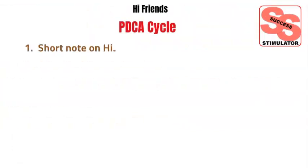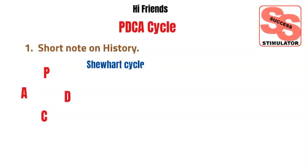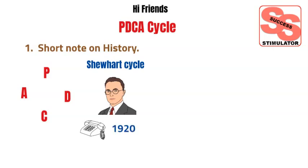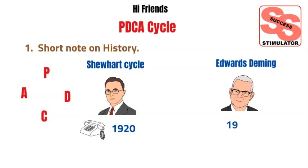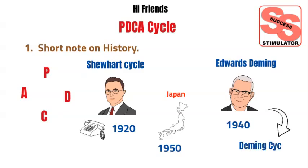Quick discussion on history. The PDCA cycle is also known as the Shewhart cycle or the control circle. The cycle originated with physicist Walter Shewhart at the Bell Telephone Laboratories in the 1920s. W. Edwards Deming modified the Shewhart cycle in the 1940s and subsequently applied it to management practices in Japan in the 1950s. We call it the Deming cycle as well.